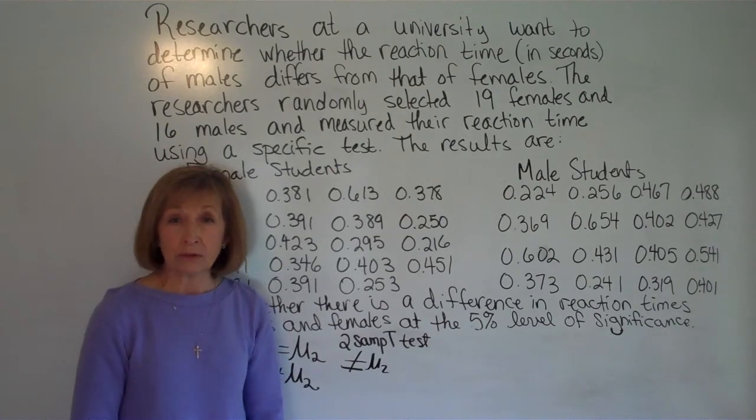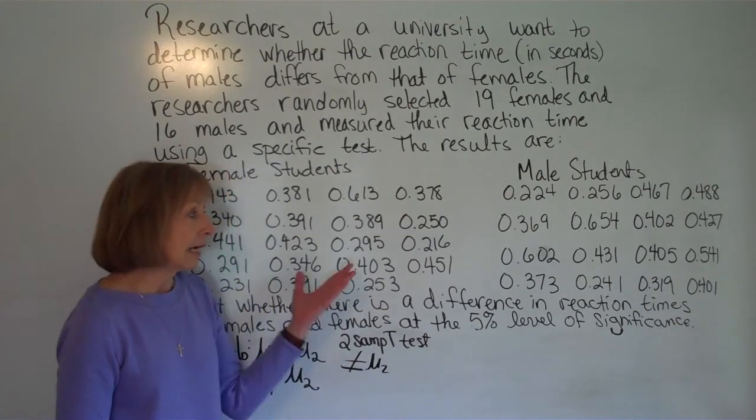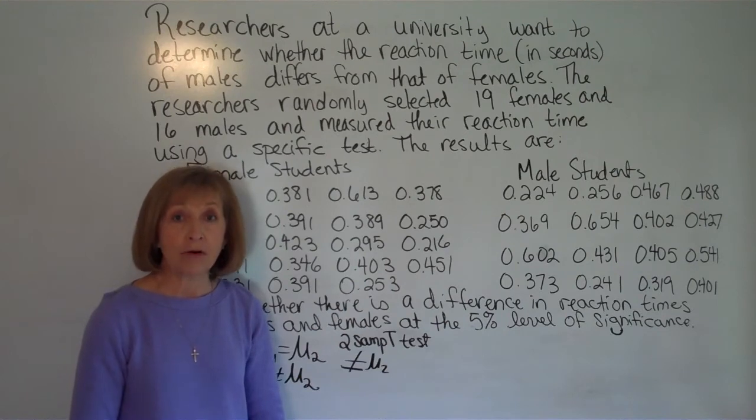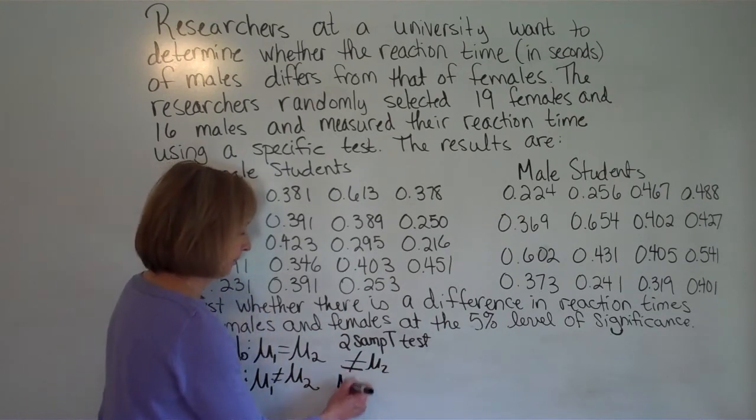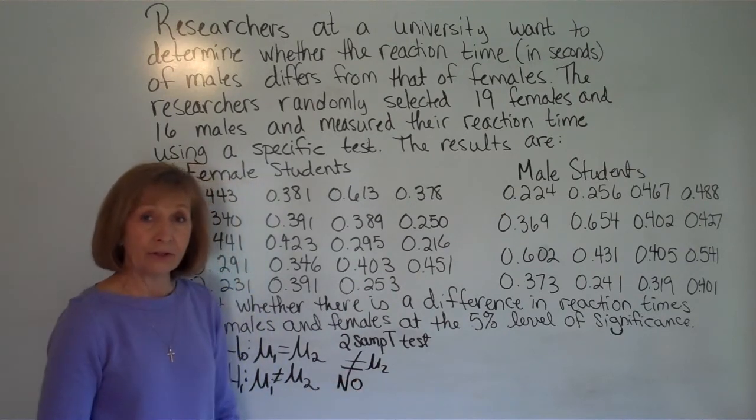After that it's going to ask you if it's pooled. For this particular application choose no. It's not pooled. And then calculate.